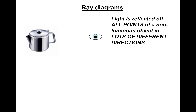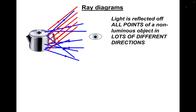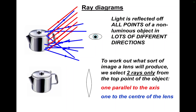So, ray diagrams. In reality, light is reflected off all points of a non-luminous object in lots of different directions. However, to work out what sort of image a lens will produce, we just do two rays from the top point of the object — one parallel to the axis and one to the centre. This is obviously a massive simplification; if we did it the first way, we'd never be able to draw diagrams.